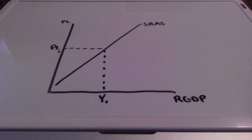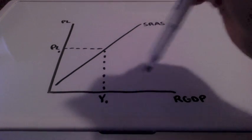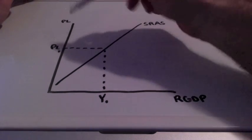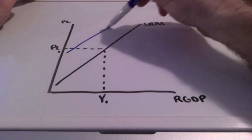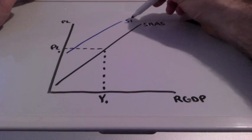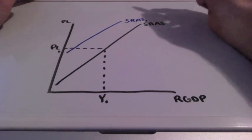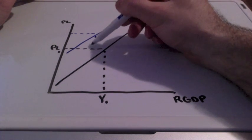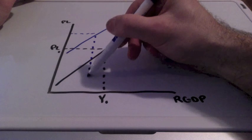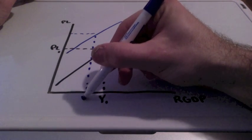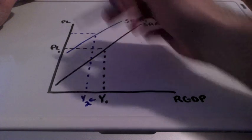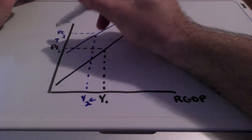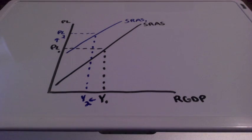There will also be situations when we see an inverse relationship between price level and GDP with the short run aggregate supply curve where the curve shifts to the left, moving to SRAS1. In this case, our price level is going to increase from PL1 to PL2 and our GDP is going to decrease from Y1 to Y2. This is a leftward shift in the short run aggregate supply curve.